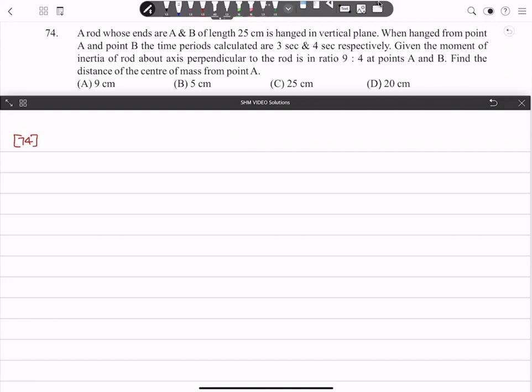A rod whose ends are A and B, of length 25 centimeter, is hanged in a vertical plane. When hanged from point A and point B, the time periods calculated are 3 seconds and 4 seconds respectively.